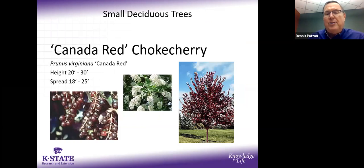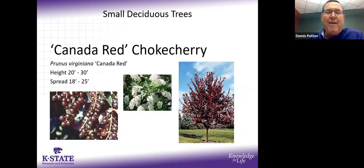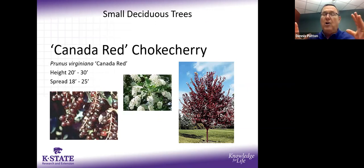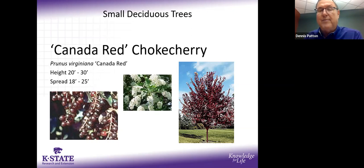Canada Red chokecherry is not my top favorite, but it comes out green then turns purple — which is what people are drawn to — with white flowers. Rarely do we see fruit. For those wanting a small tree with summer purple color, options are limited: this, Japanese maple, and the Newport plum, which is an extremely short-lived tree. The main issue with chokecherry is it can sucker very badly — almost forming a thicket of shoots.